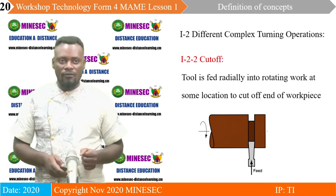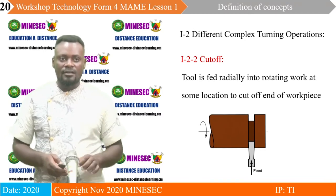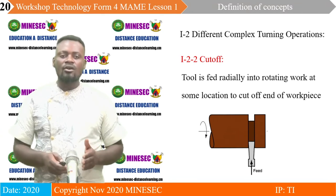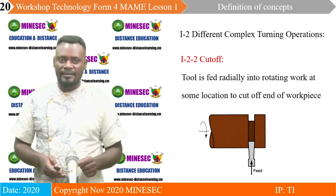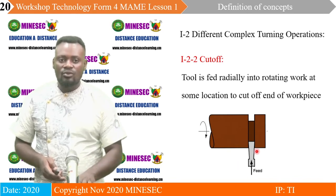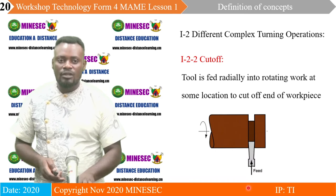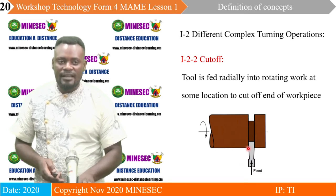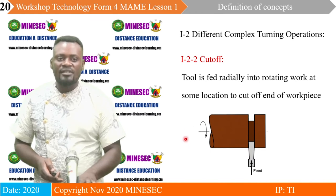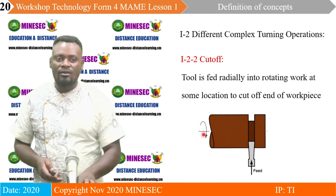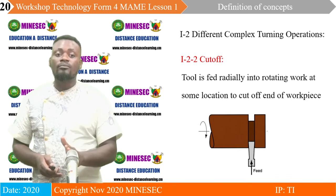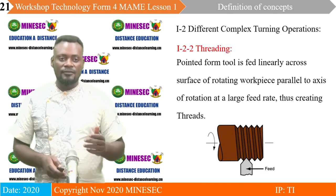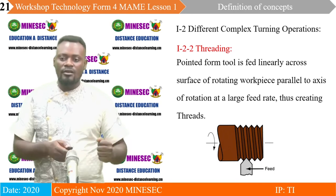We have cut-off, some people call it part-off. The tool is fed radially into a rotating workpiece at some location in order to cut off and separate the piece into two different parts. The tool is fed vertically towards the workpiece while the workpiece keeps rotating on the axis of the spindle. This separates one piece to become two pieces, different from what we used to do with a hacksaw on the bench.